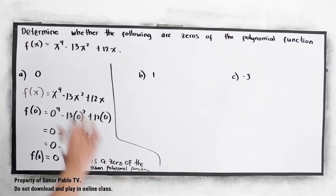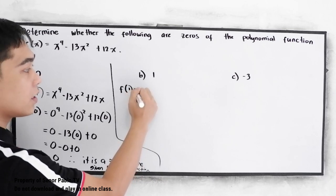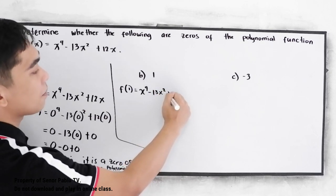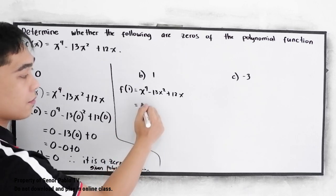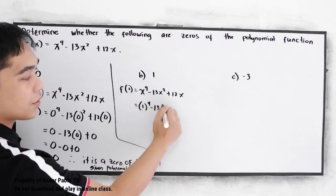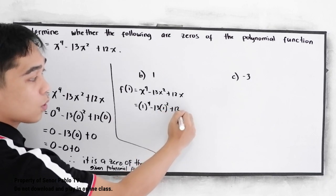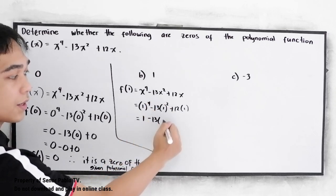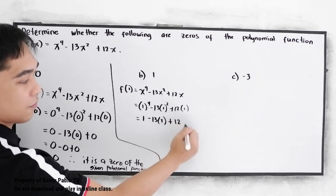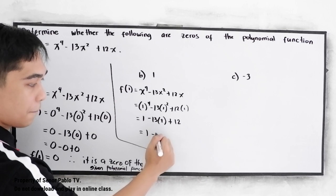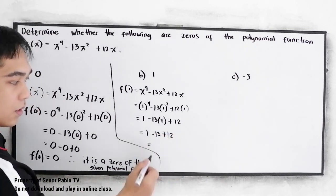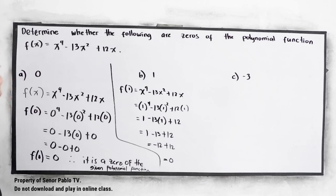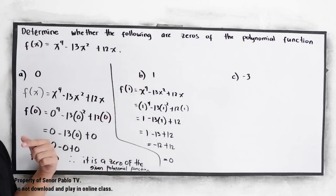Letter b: f of 1 is equal to 1 raised to 4 minus 13 times 1 squared plus 12 times 1. So 1 raised to 4 is 1, minus 13 times 1 squared which is 1, plus 12. We have 1 minus 13 plus 12, which is negative 12 plus 12, giving us 0. Therefore, 1 is a zero of the given polynomial function.